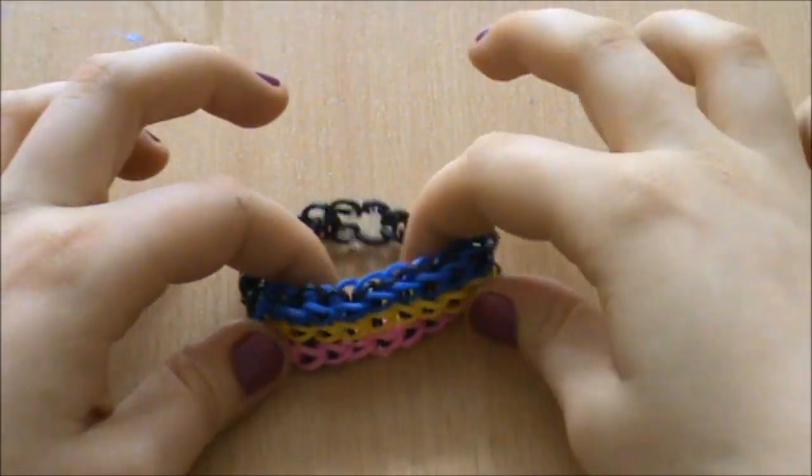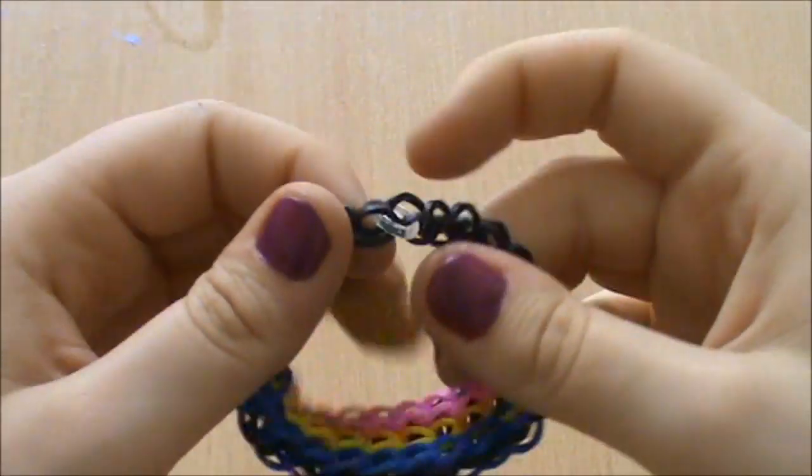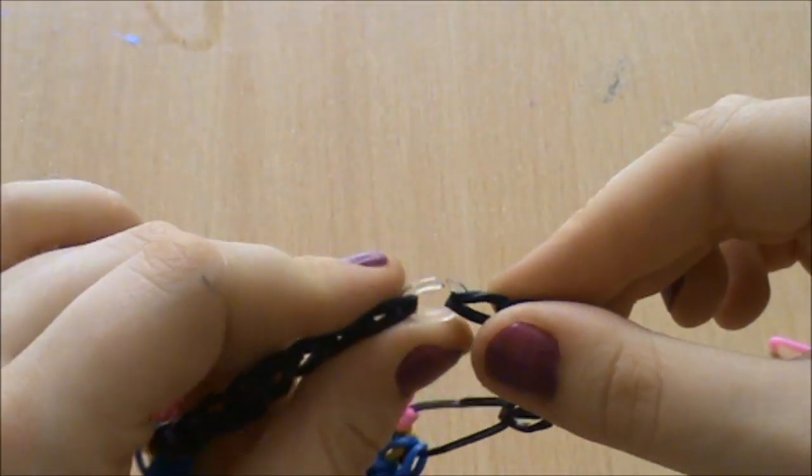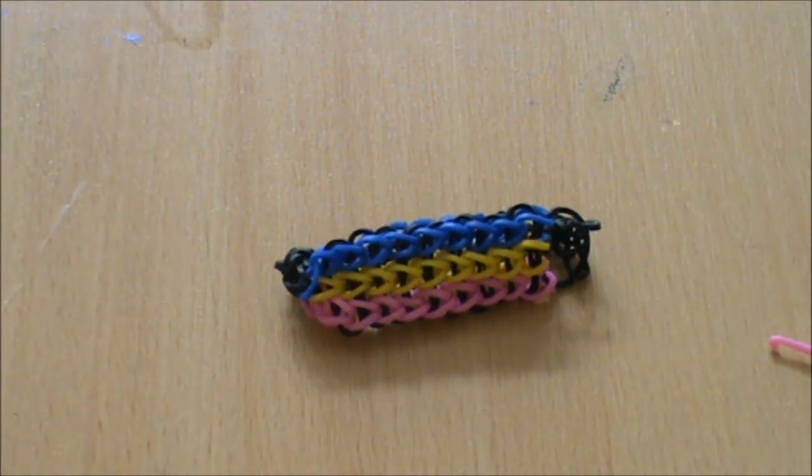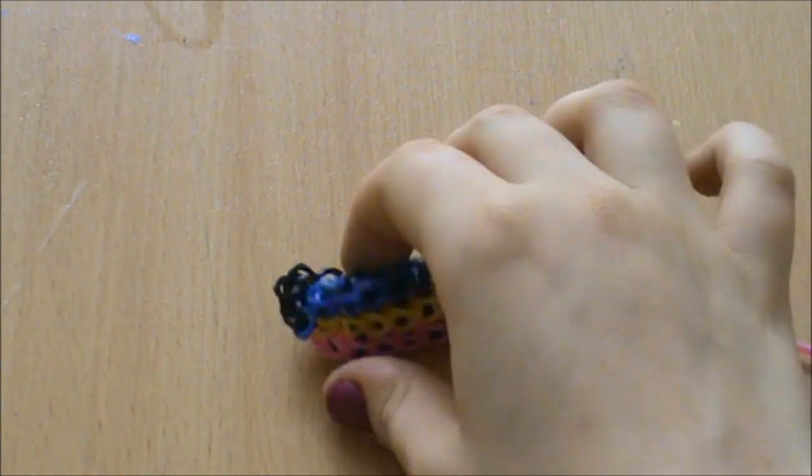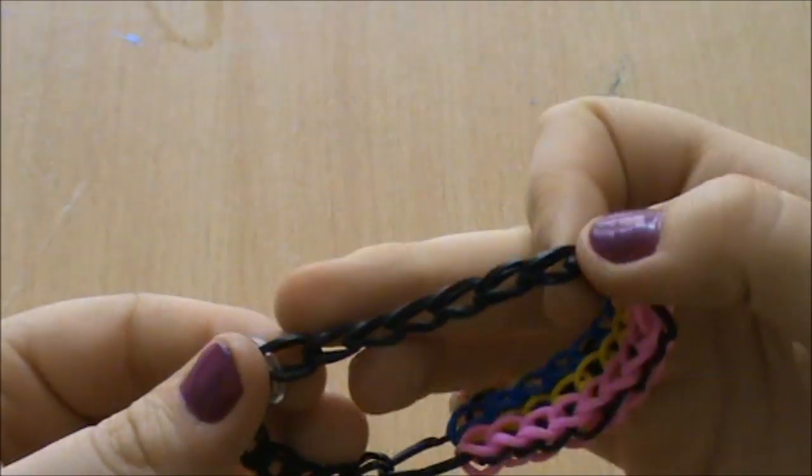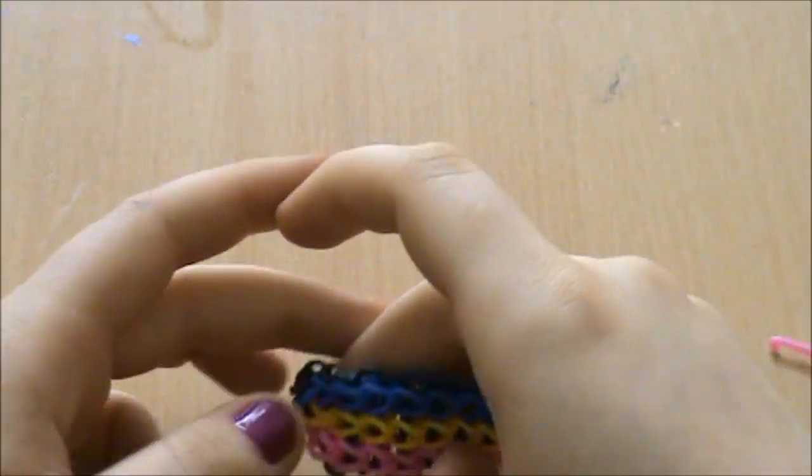And there you have it, your completed triple single bracelet. All I did to finish it off was pop the C clip in, or S clip, or whichever clip you like to use, and then it's good to wear. Don't forget to check the description box below for any details that I think you might find useful, such as where you can buy all of the materials I've mentioned today, along with the video on how we do the single chain using the stretch bands.